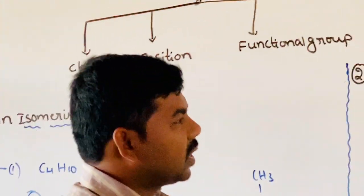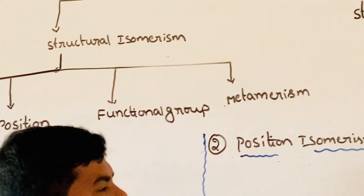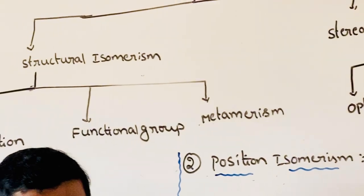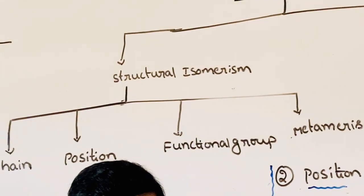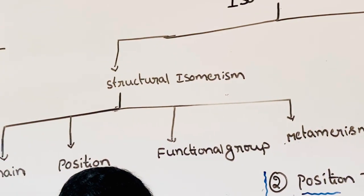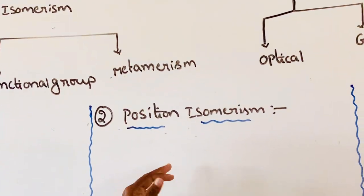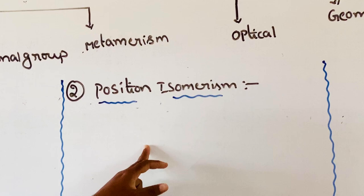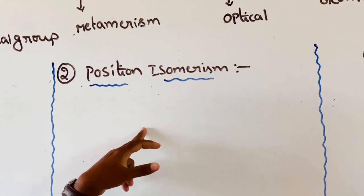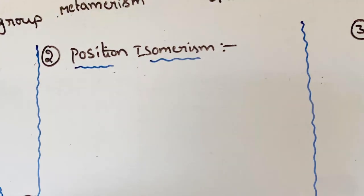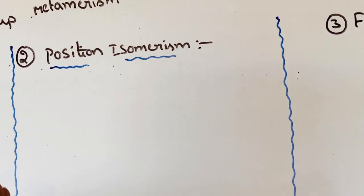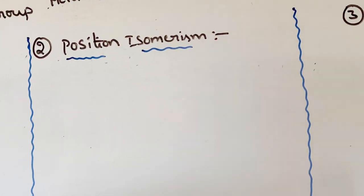Position isomerism. Molecular formula is same for two or more compounds but different positioning of multiple bonds, functional groups, or substituents — this is called position isomerism.